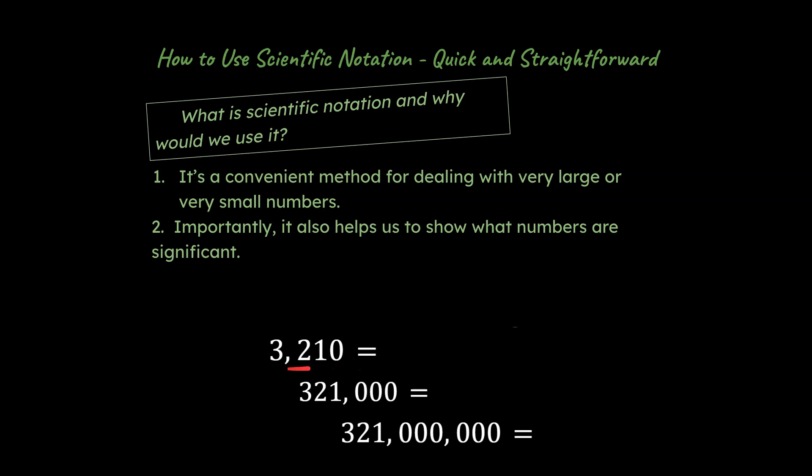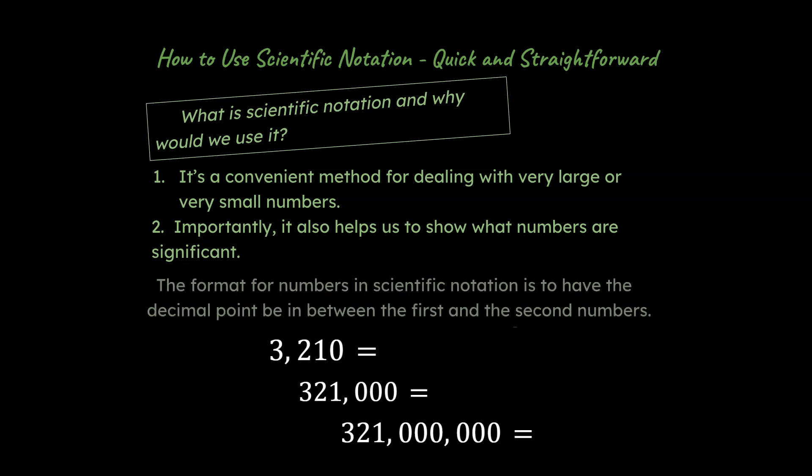So if we wanted to represent this number here, 3210, in scientific notation, typically how we would do this is we would write 3.21 times 10 to the third. This is an equivalency here. These two numbers are the same value, just written in different ways. If we multiplied 3.21 times effectively 1,000, it would give us 3,210.